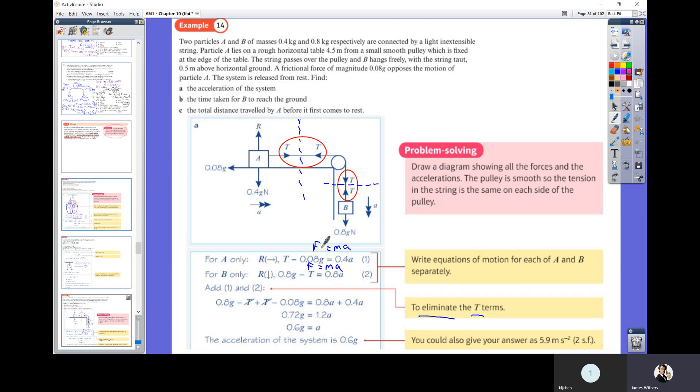When you're looking at A, so again our starting point is f equals ma, as always. We are resolving in the direction of motion, which is left to right. Our tension must be bigger than our friction because we're moving to the right. So t minus our friction of 0.08g equals our mass times our acceleration. And then when we look at it from the point of view of B, the weight must be greater than the tension because it's going downwards. So our 0.8g minus t equals 0.8a. So again we end up with two equations and two unknowns. In fact, we only got the one unknown there - no, sorry, two unknowns, of course: the tension and the acceleration. So again, two unknowns, two equations, so we can just solve the simultaneous equation.